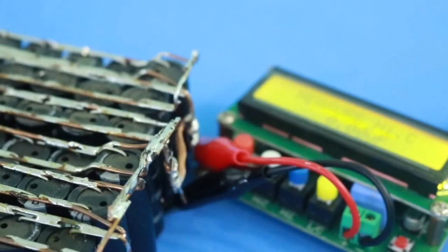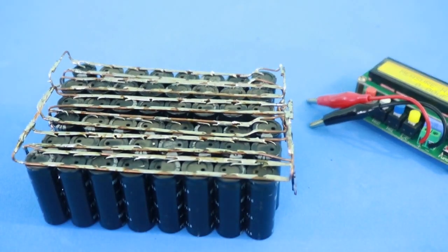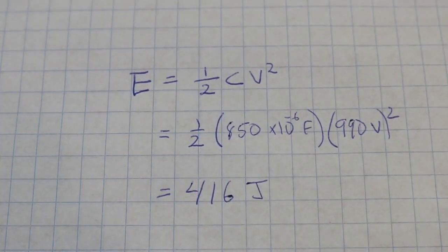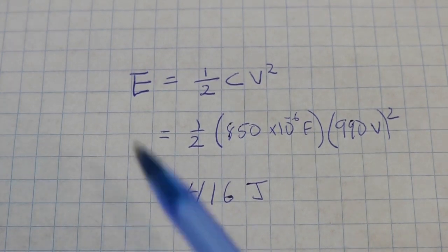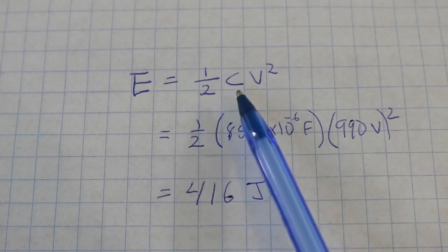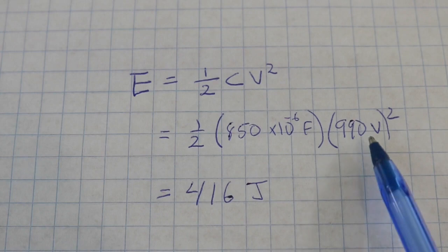The maximum energy that can be stored in this capacitor bank is given by this formula: one half of the capacitance times voltage squared. With the values of our bank, this results in a total energy of 416 joules of energy.